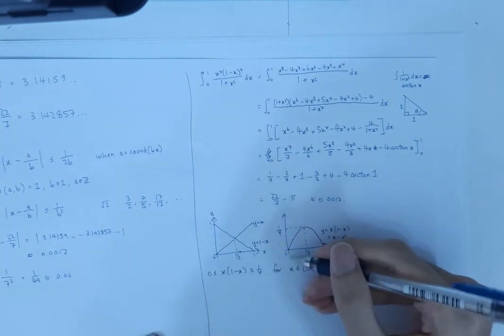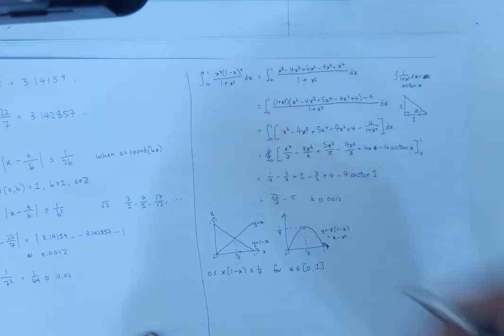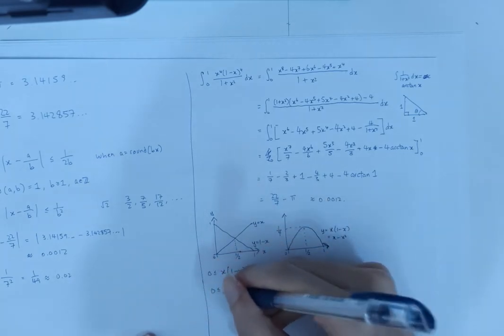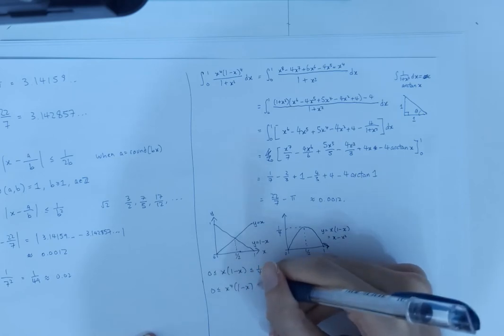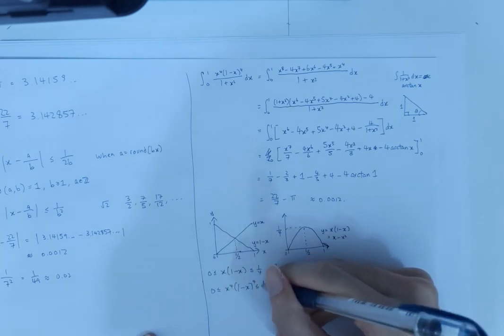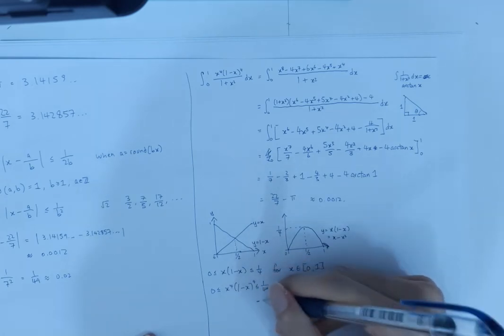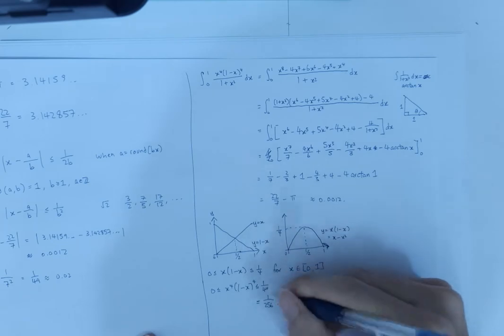So we don't care about what happens when x is less than 0 or when x is greater than 1 since we are only doing the integral from 0 to 1. And if we take this to the fourth power, then we get x power 4, 1 minus x power 4, and 1 over 4 power 4. And this thing goes to 1 over 256, which is obviously less than 1 over 49.